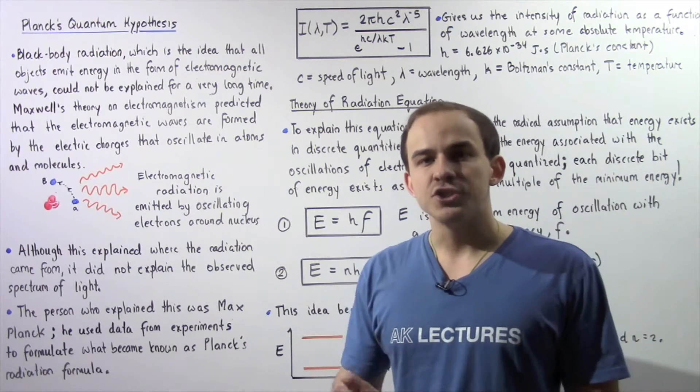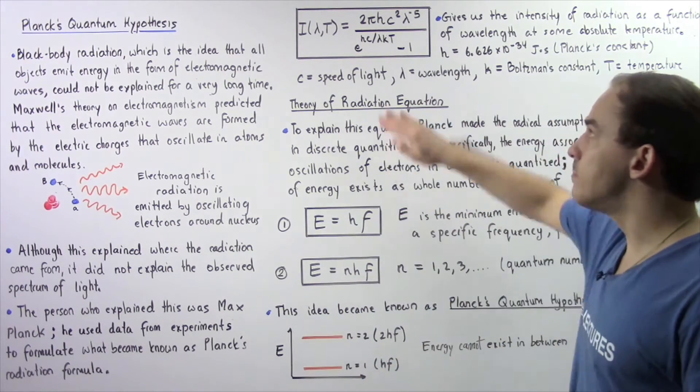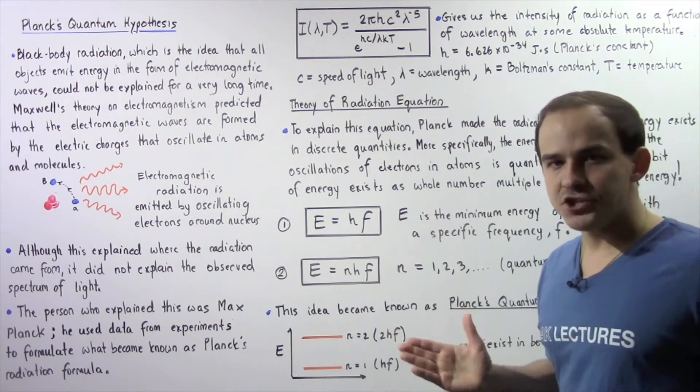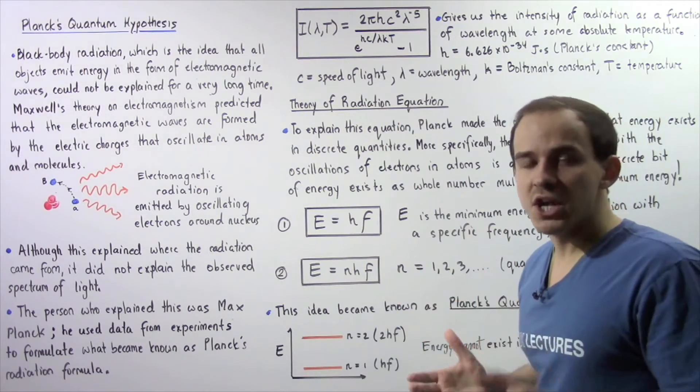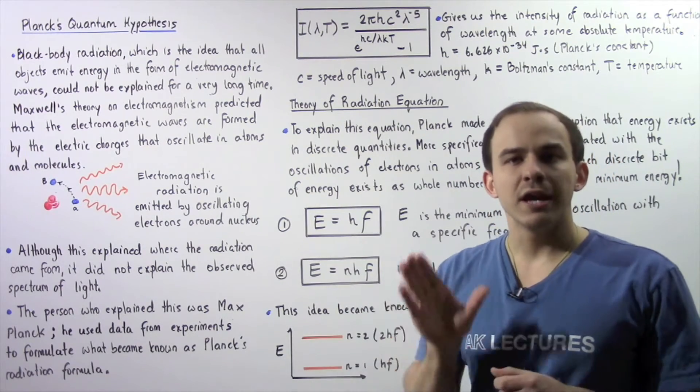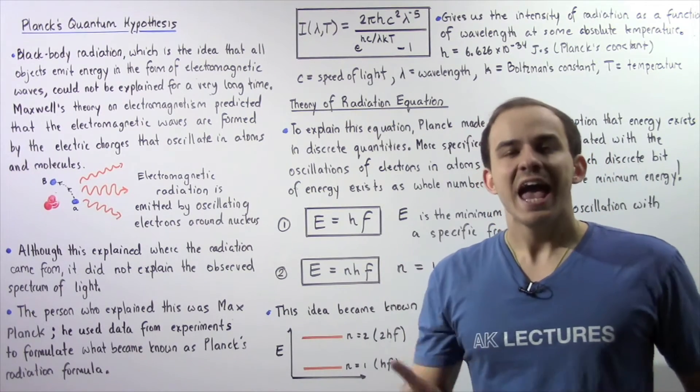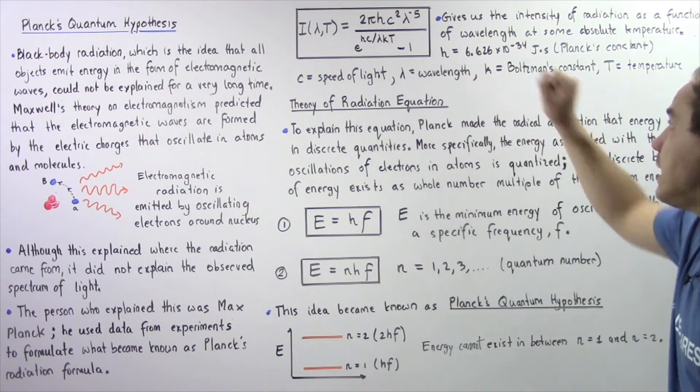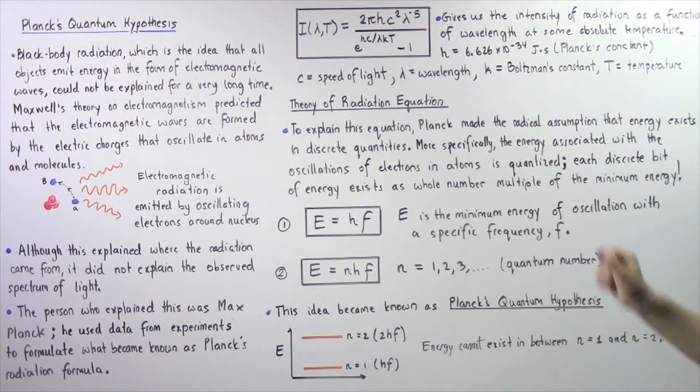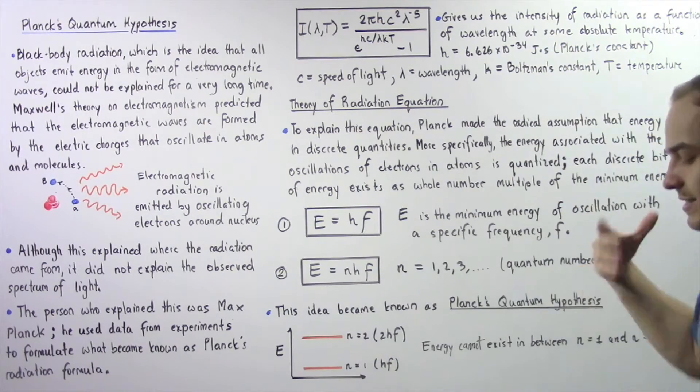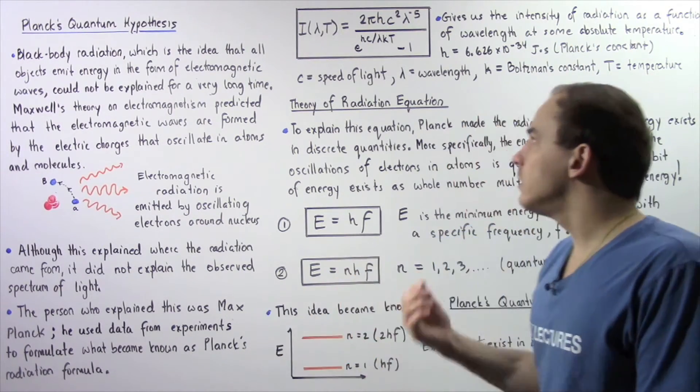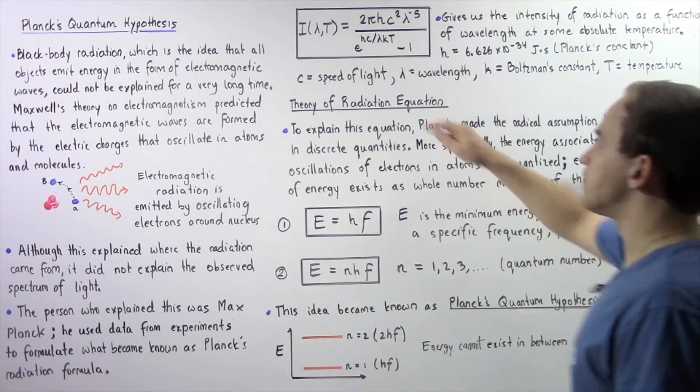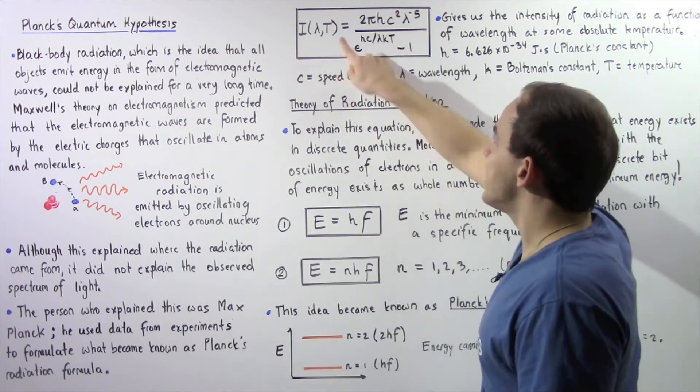So this equation basically tells us the intensity of the electromagnetic radiation as a function of the wavelength at some particular absolute temperature, where the absolute temperature is the temperature of the object that is emitting that electromagnetic radiation.